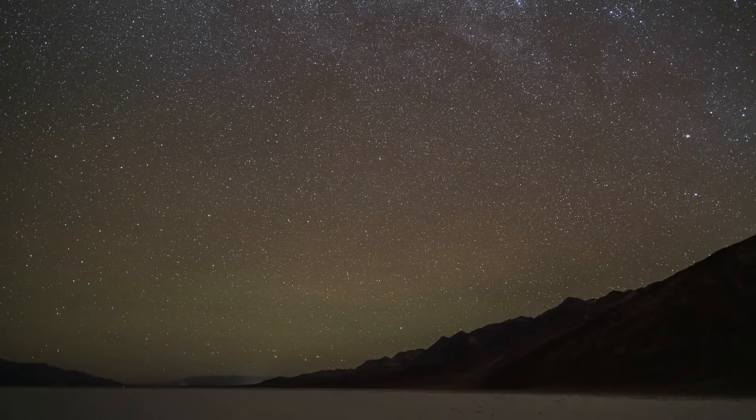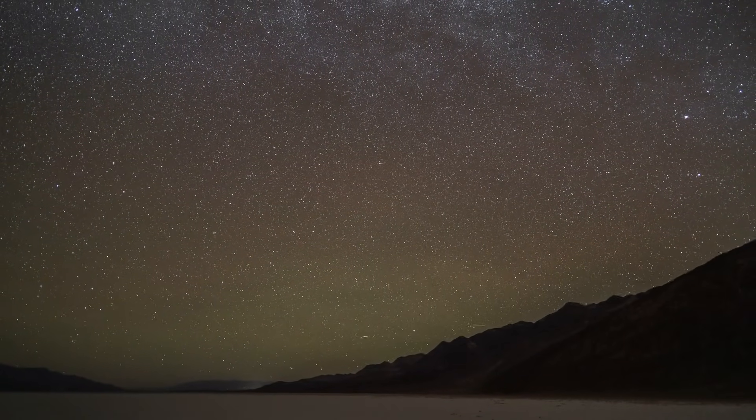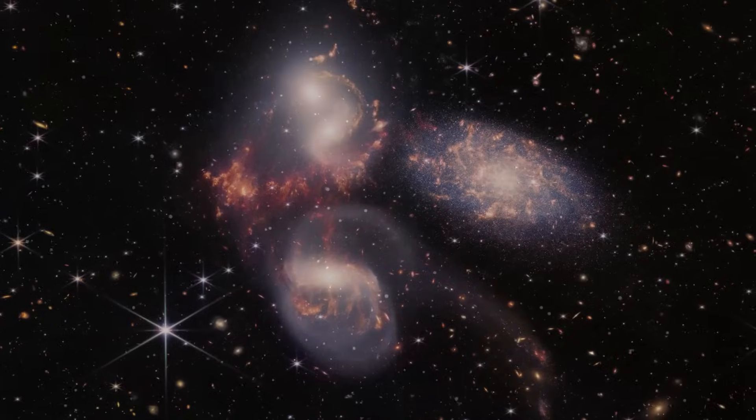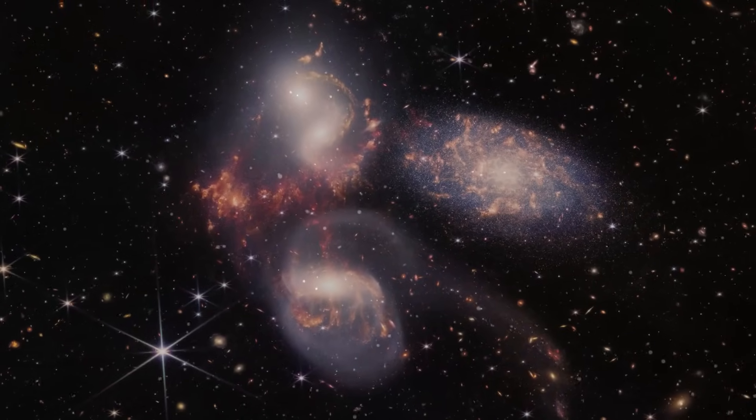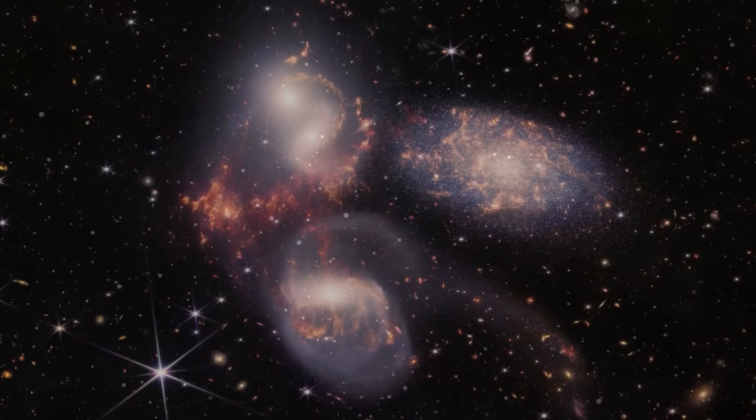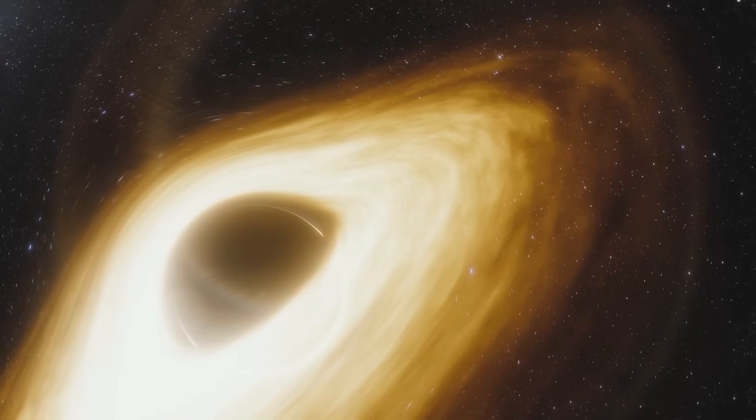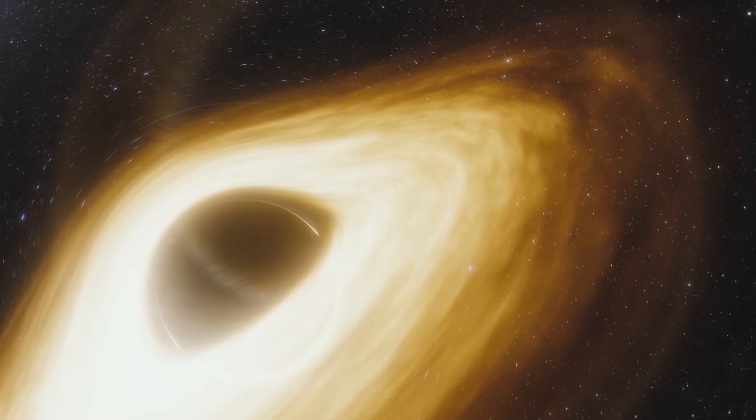All three quasars existed when the universe was less than 800 million years old. These observations give scientists the opportunity to understand more about galaxy evolution and the formation of supermassive black holes in this early era of the universe.